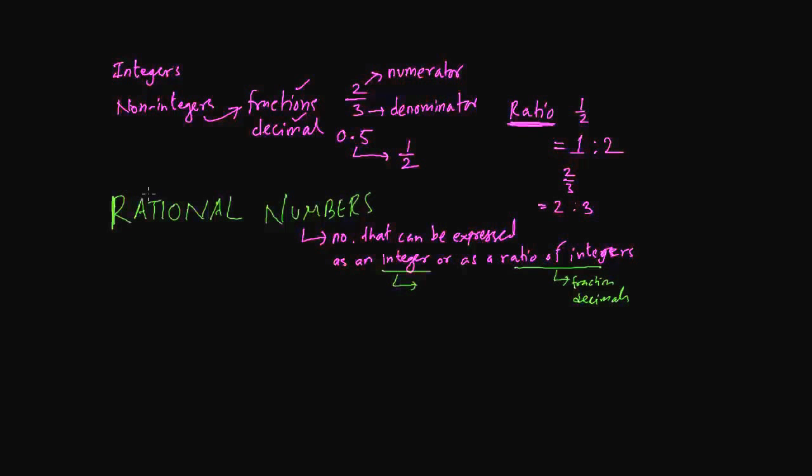So most of the numbers are rational numbers. Every integer is a rational number. So let me give you some examples. For example, 5 is a rational number. 2 by 3 is a rational number because it can be expressed as the ratio of two integers.